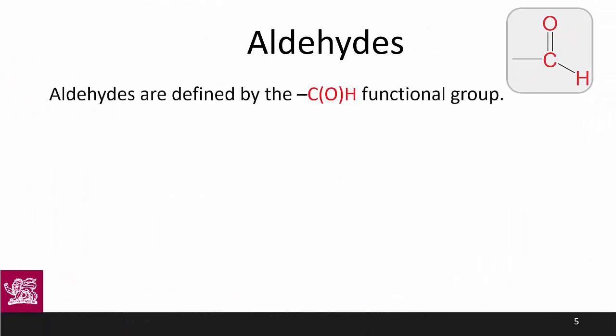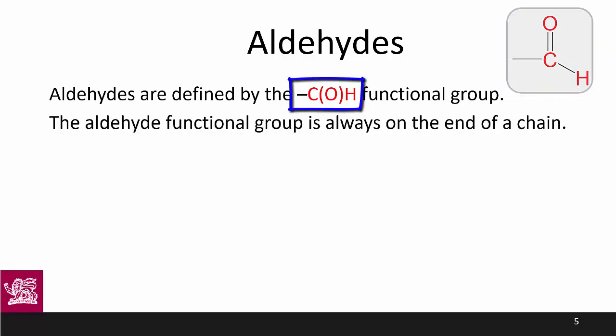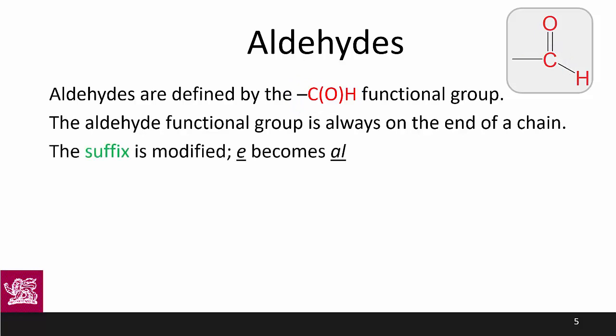Key features of aldehydes are that the carbon chain is bonded to a carbon which is double bonded to an oxygen and also bonded to a hydrogen. It looks like this and is abbreviated in semi-structural formula as shown. Because of the three bonds on this key carbon, you can't have an aldehyde in the middle of a chain. With aldehydes, the suffix is modified: the '-e' of '-ane', '-ene', or '-yne' becomes '-al'.